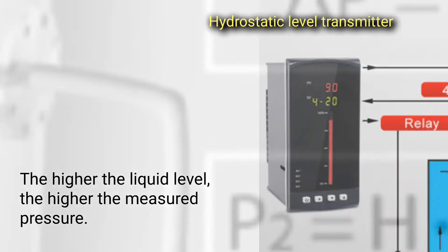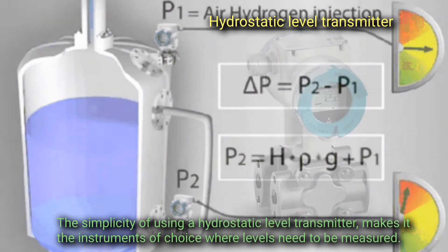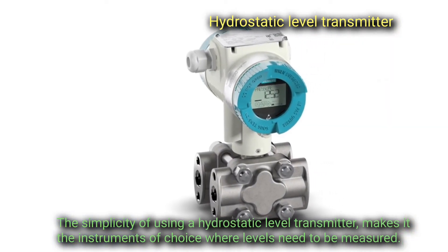The higher the liquid level, the higher the measured pressure. The simplicity of using a hydrostatic level transmitter makes it the instrument of choice where levels need to be measured.